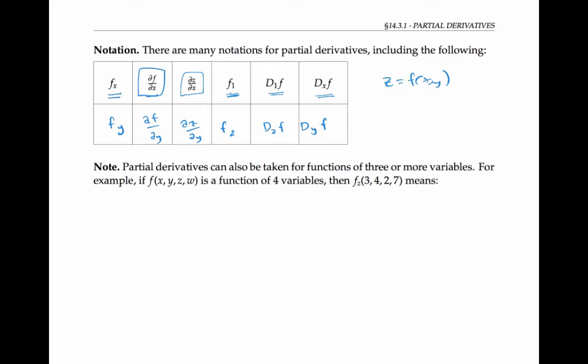Partial derivatives can also be taken for functions of three or more variables. For example, if we have a function of four variables f of x, y, z, and w, then we can take the derivative in the z direction, that's the third direction. And that means that we hold x, y, w constant, and we take d/dz of f of three, four, z, seven evaluated when z is two.